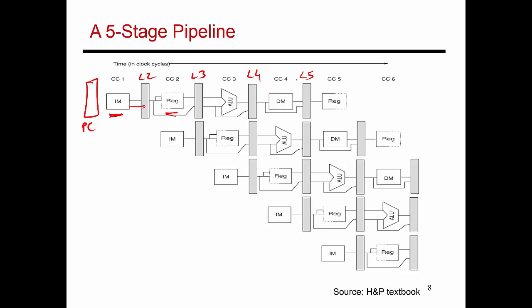While that first instruction goes through five stages in five consecutive cycles, a second instruction starts up in cycle two, reads the instruction memory, then moves on to reading its registers in cycle three, and so on. In cycle three, a third instruction enters the pipeline. By cycle five, the pipeline has warmed up, where five different instructions are in different stages of execution simultaneously, all doing different things at the same time.